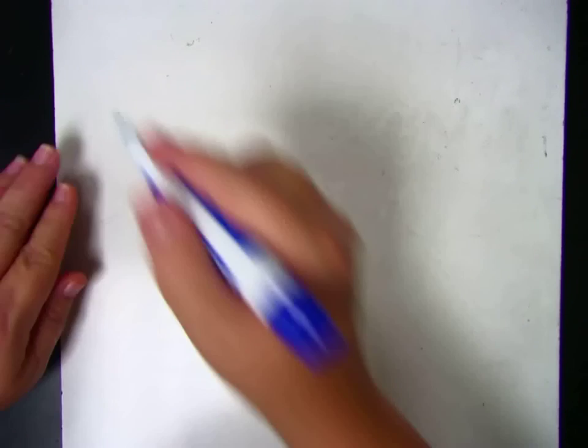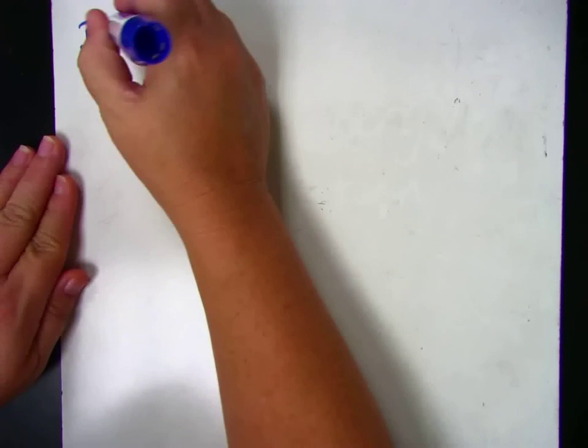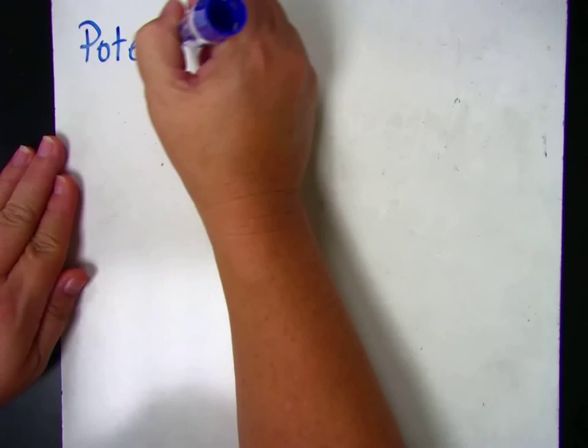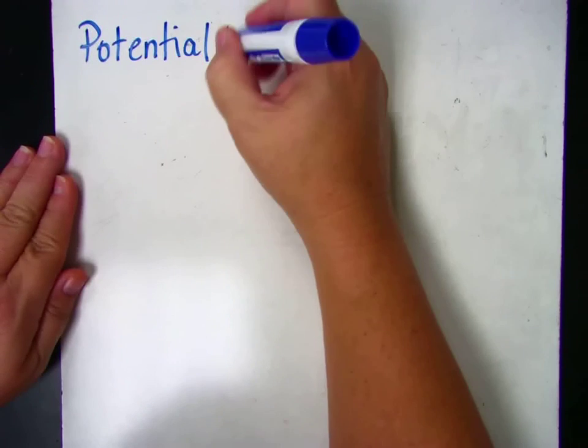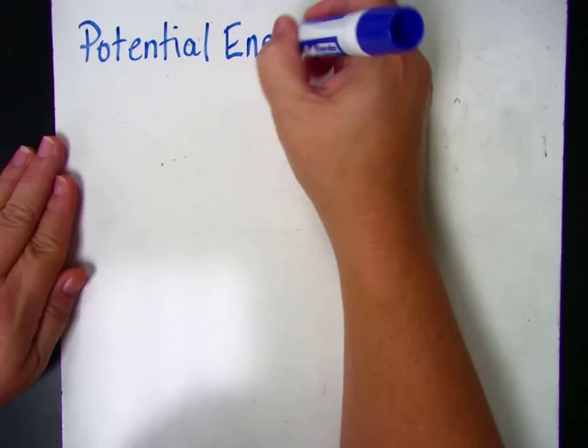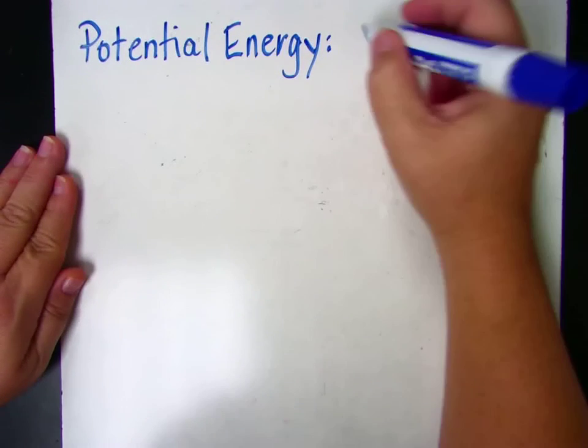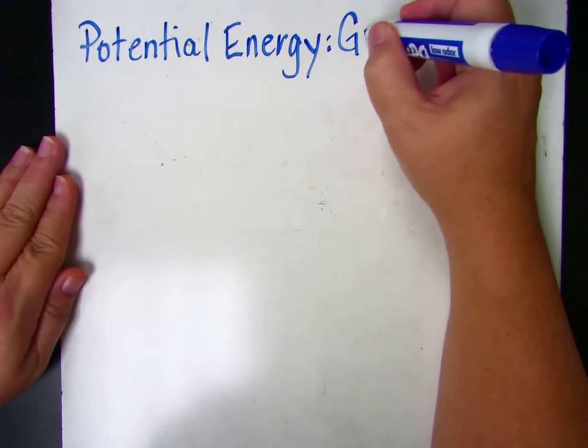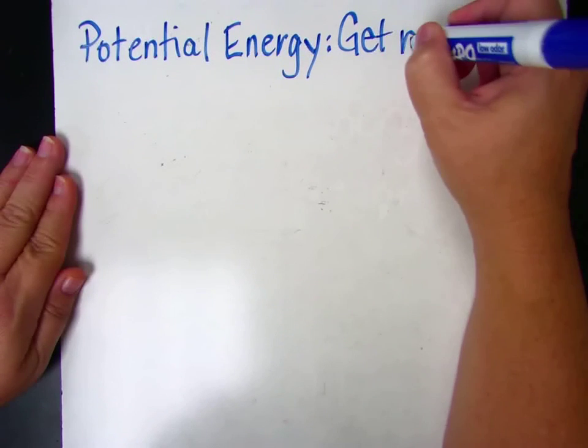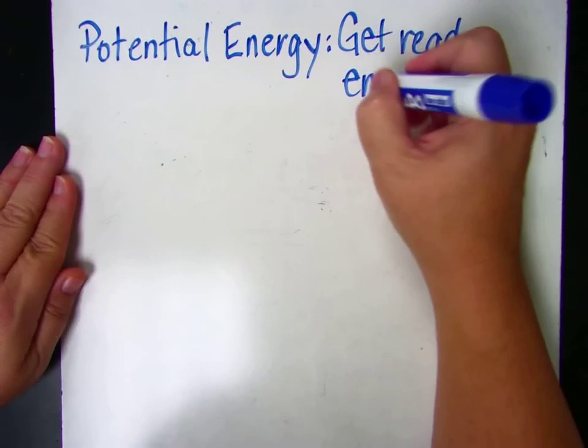Okay, so the first type of energy we talked about was potential energy. Potential energy is get ready energy. That's the energy something has when it's just getting ready to go.